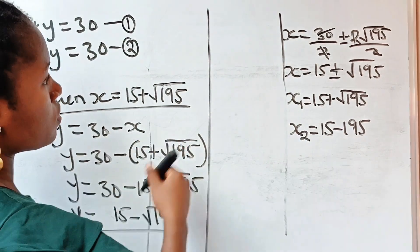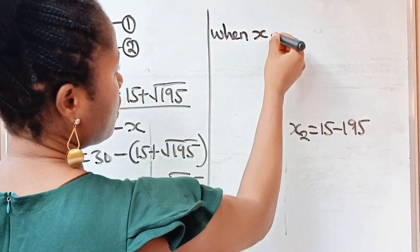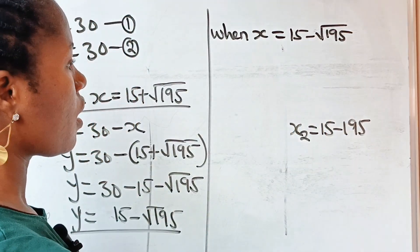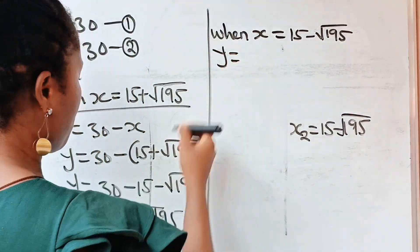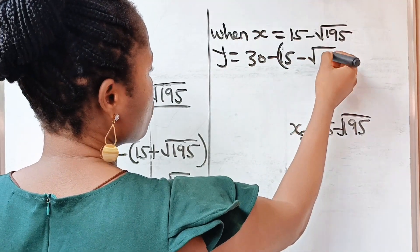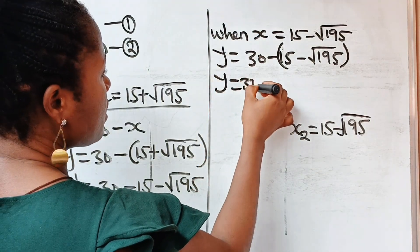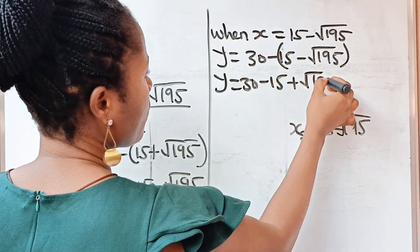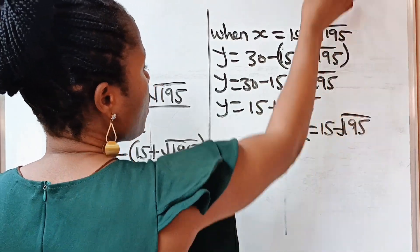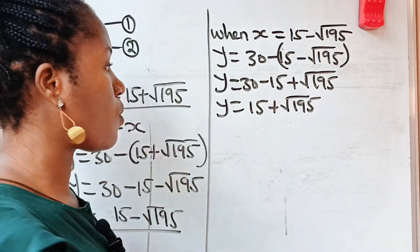When x equals 15 minus root 195, y equals 30 minus x, that is 30 minus (15 minus root 195), so y equals 15 plus root 195. So when x is 15 minus root 195, our y is 15 plus root 195.